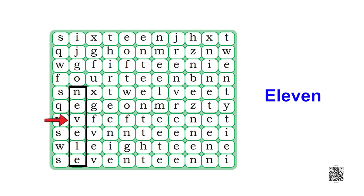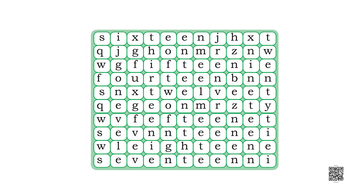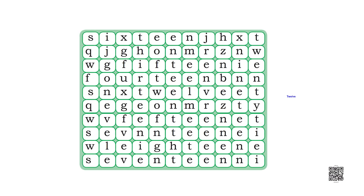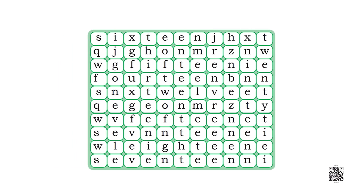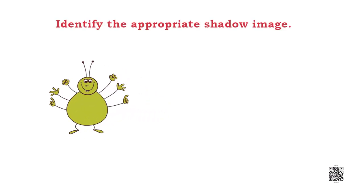Let's find where 12 is written. The name of 12 starts from the fourth box of the fifth row. Just like this, you have to find all the names from 13 to 20.